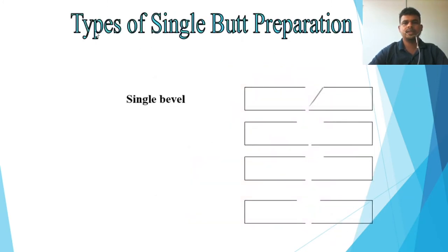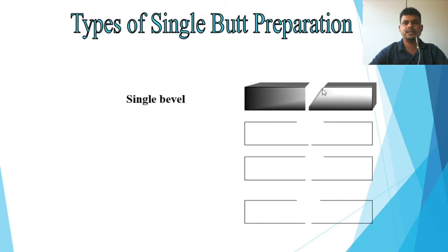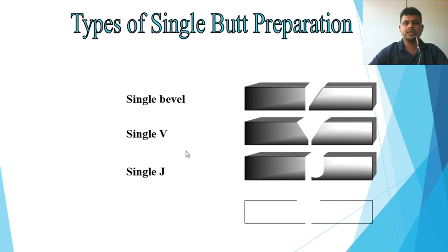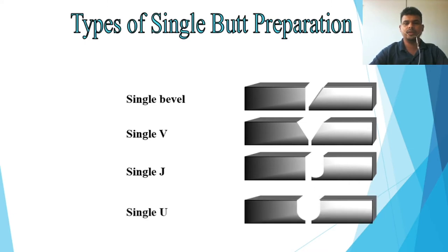The types of single butt preparation are: single bevel — one side only; single V — two bevels forming a V shape; single J — one side shaped like the letter J; and single U — when both sides are J-shaped, forming a U.